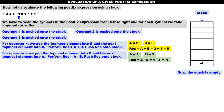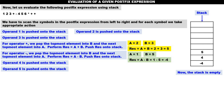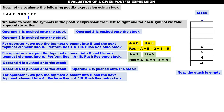Next: go to symbol four — it is an operand, push it onto the stack. Five is an operand, push it. Six is an operand, push it. Next symbol: star. Star is an operator. For operator star, we pop the topmost element into B, and the next topmost element into A, then perform RES = A * B. The topmost element is six — six goes to B. Next topmost is five — five goes to A. Five into six is 30. Push 30 onto the stack.